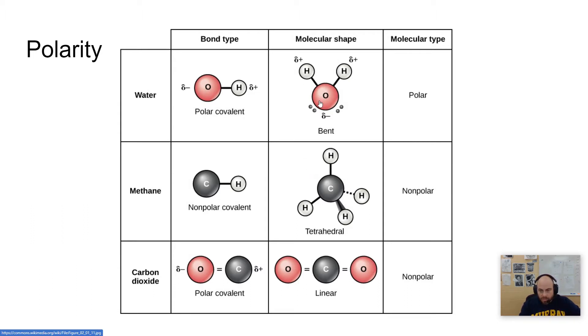But water is an example of a polar molecule in that the oxygen is hoarding those electrons more frequently than the hydrogens are.